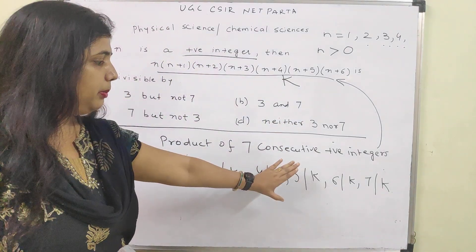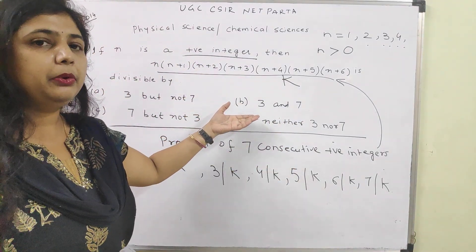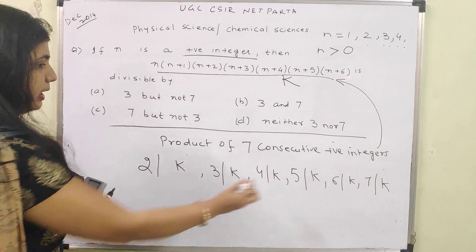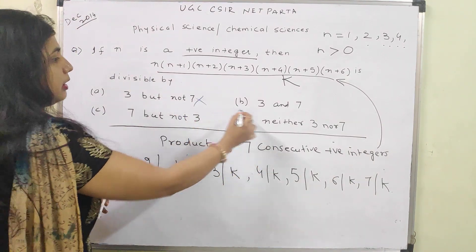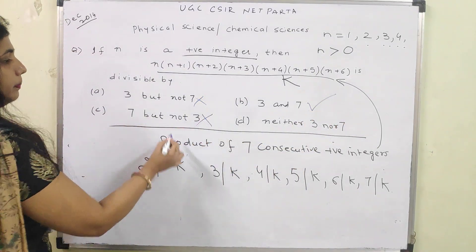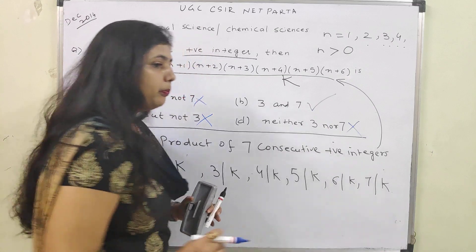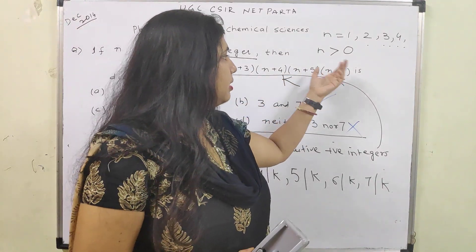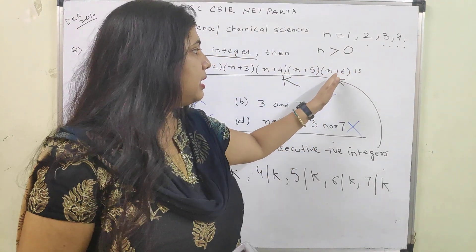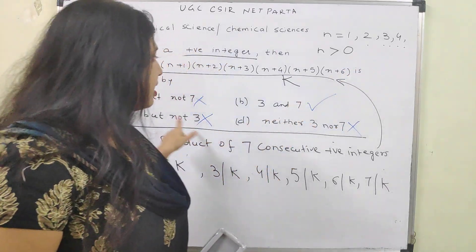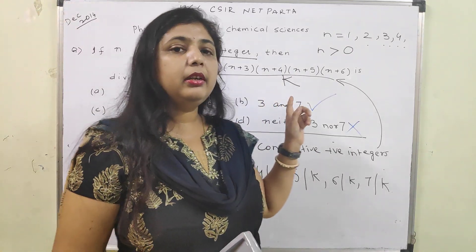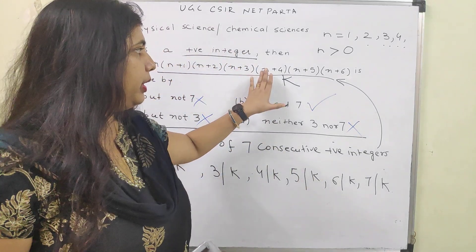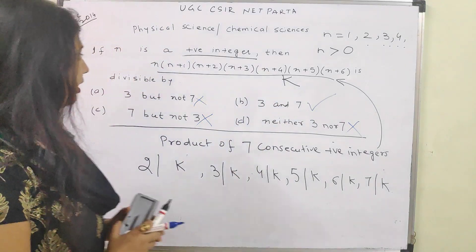Now let us look at the option: divisible by 3 but not 7. We see that starting from 2 to 7, both 3 and 7 divide this product. So options saying '7 but not 3' or 'neither 3 nor 7' are wrong. In an examination the numbers may differ, but if the concept is clear you can quickly crack this problem. The correct answer is option B.